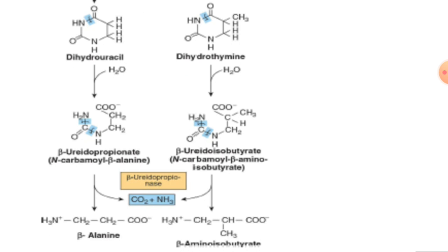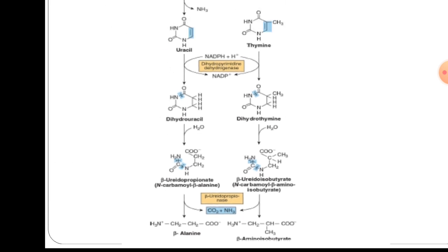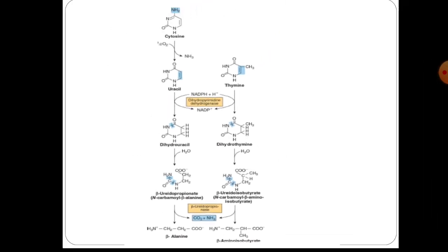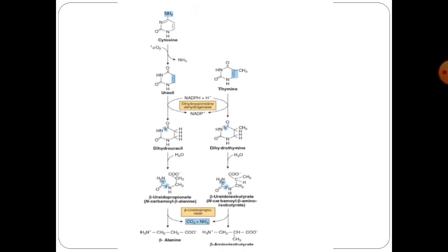From uracil, beta-ureidopropionate is produced, and from thymine, beta-ureidoisobutyrate is produced. Finally, carbon dioxide and ammonia will be produced, and on either side, from uracil beta-alanine and from thymine beta-aminoisobutyrate will be generated. This is a very small pathway — perhaps the smallest pathway in entire biochemistry and metabolism.